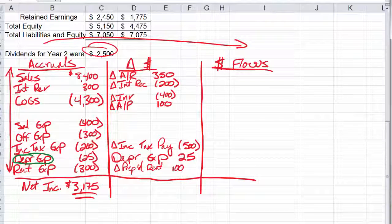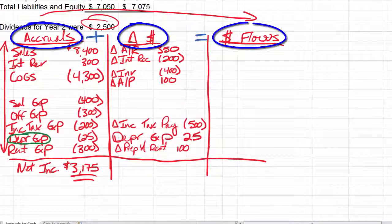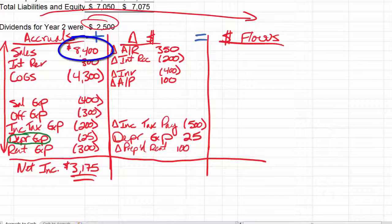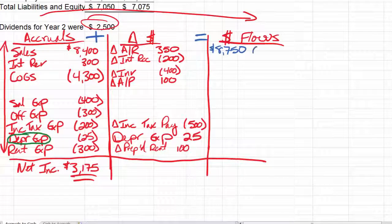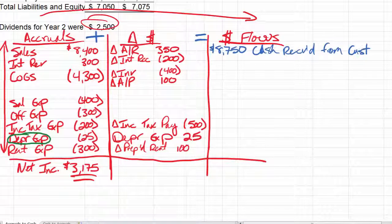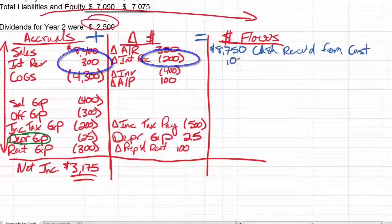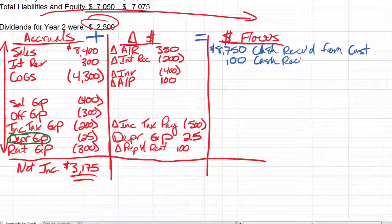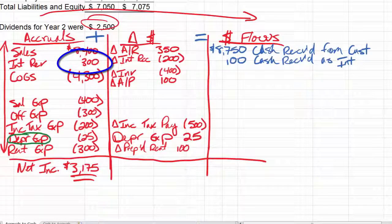Last step then is to complete. If you remember, the equation here is the accruals plus the change gives me cash flows. So 8,400 plus 350 gives me a positive 8,750. And we call that cash received from customers.